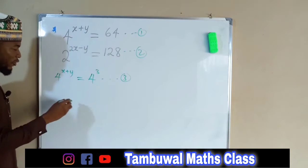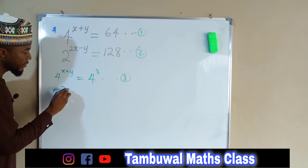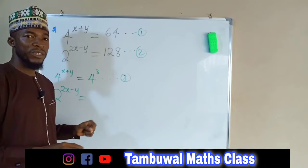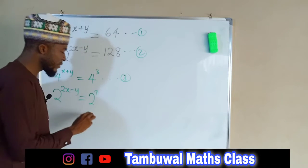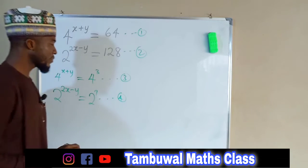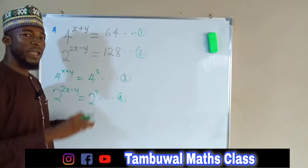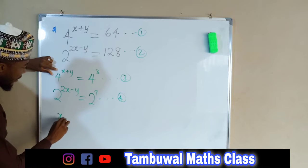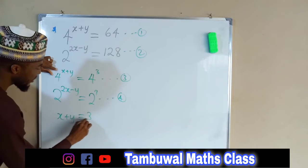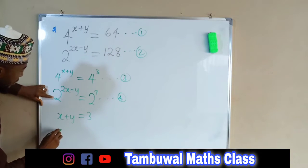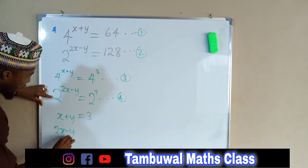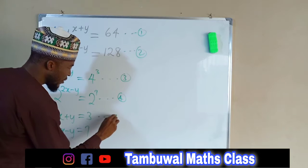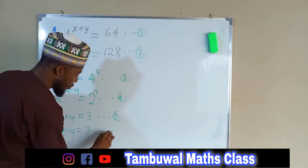From equation 2 we can also transform it: 2 to the power of 2X minus Y equals 128, and 128 can also be written as 2 to the power 7. Let me call this equation 4. Now since they have common basis, we can equate their indices. From equation 3 we can see that X plus Y must be equal to 3. And from equation 4, 2X minus Y must be equal to 7.